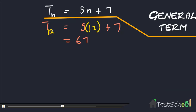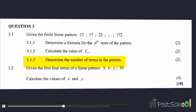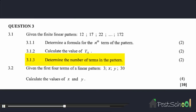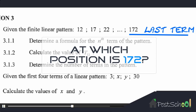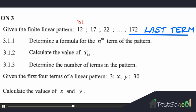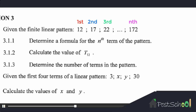The third question asks us to determine the number of terms in the pattern. Our pattern goes from 12, 17, 22 up to 172. Since 172 is the last term, we need to find which position it occupies. The term 172 lies at the nth position, so 172 is going to be tn.